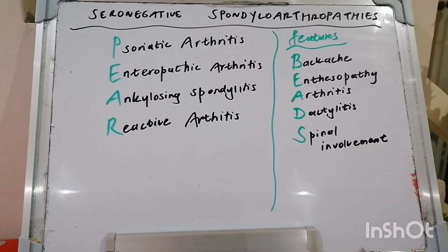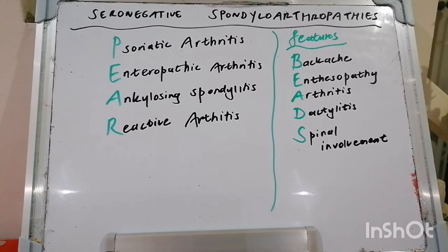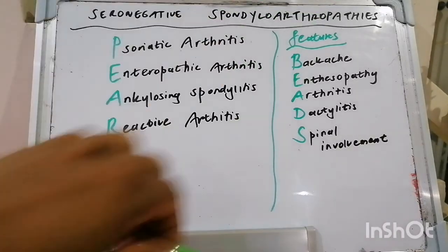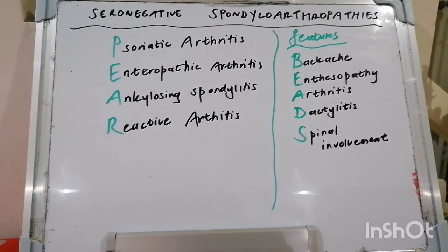Management-wise, we go with symptom control versus treating the underlying cause. Symptom control in the way of physiotherapy, non-steroidals, and glucocorticoid injections. Treating the underlying cause — the options in our arsenal include sulfasalazine, methotrexate, pamidronate, and anti-TNF agents, as well as surgery. We'll be talking about therapeutics in another video. So there you have it — the mnemonic for seronegative spondyloarthropathies: PEAR, and the clinical features: BEADS. God bless you.